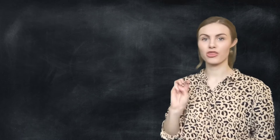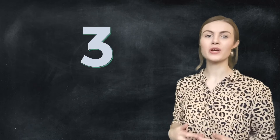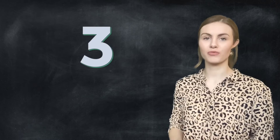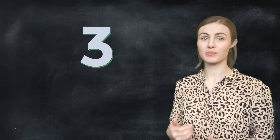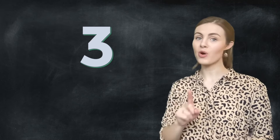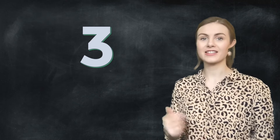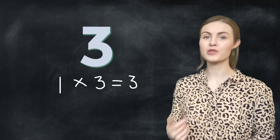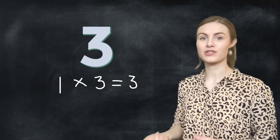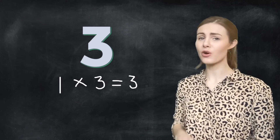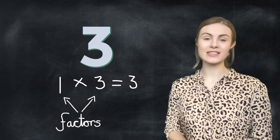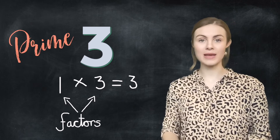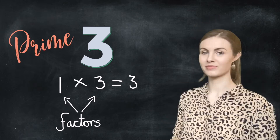Let's have a look at an example: three. We're going to factor three. Well, it's only divisible by one and itself — one multiplied by three is three. So it's only got two factors, which means that it's a prime number.